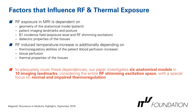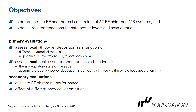Our paper investigates 6 anatomical models in 10 different imaging landmarks and considers the entire RF excitation space at 3 Tesla, with a special focus on normal and impaired thermoregulation. The overall objectives are primarily to determine the RF and thermal constraints of 3 Tesla RF-shimmed MR systems, and to derive recommendations for safe power levels and scan durations, including assessing local RF power deposition as a function of different anatomical models and all possible RF shimmed excitations.